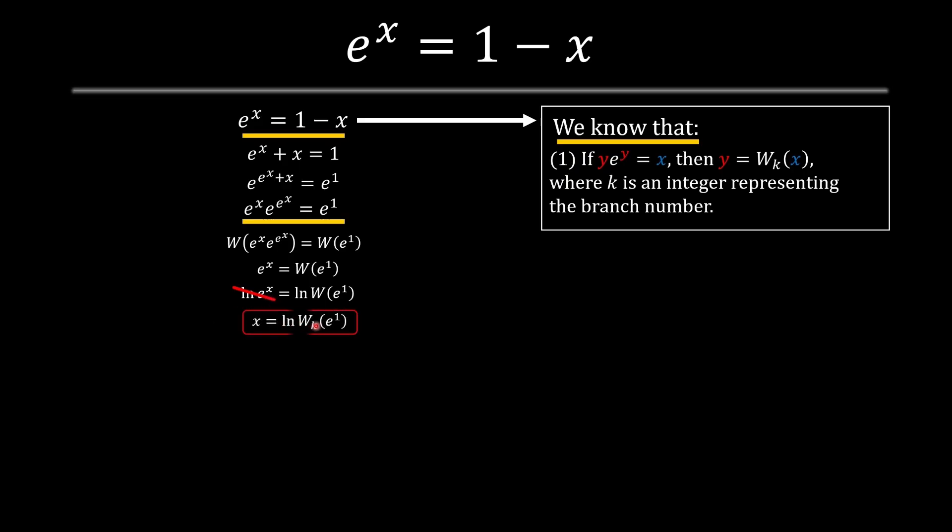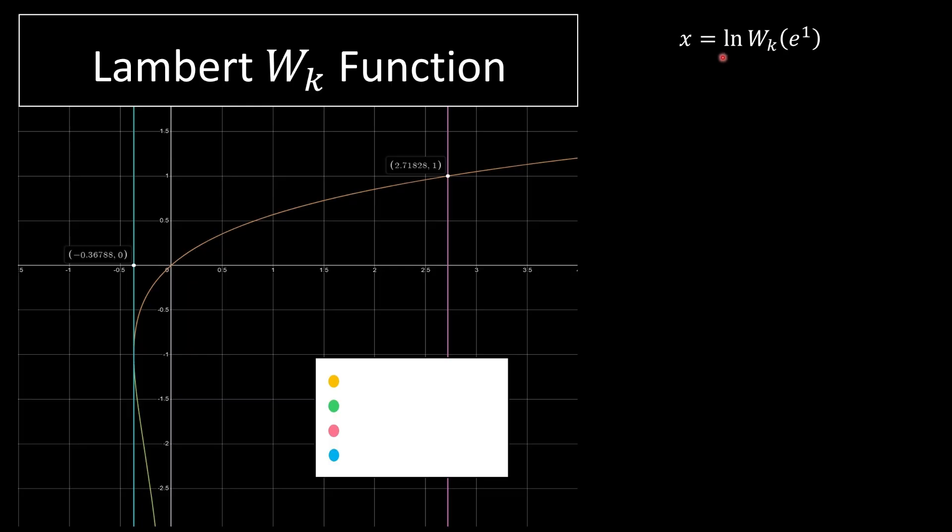I'll be discussing the branch number. So this is our equation from the previous section. We know that e to the 1 is equal to 2.7182. Now let's look at the graph, the Lambert W.